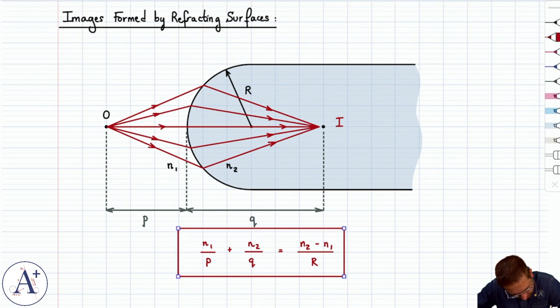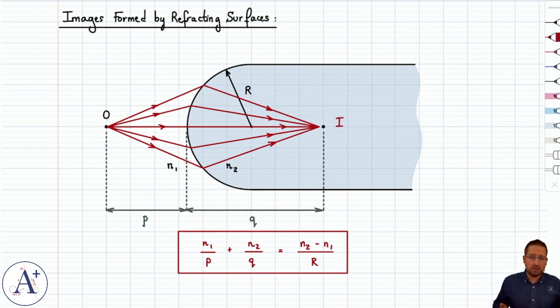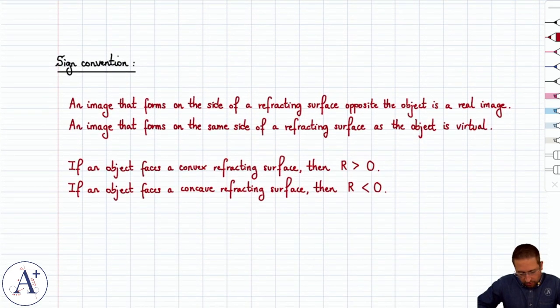And again, we're not deriving this relationship. The point is to know that there actually is a relationship between all of these quantities. And what we need to discuss here before we look at Lensmakers formula is the sign convention for r.